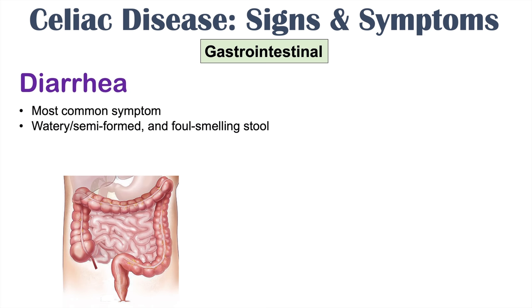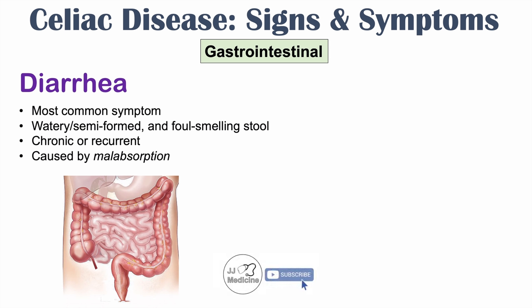The diarrhea is often a watery or semi-formed stool and it is foul smelling. It is a chronic or recurrent issue. This diarrhea is caused by malabsorption — nutrients not being absorbed end up in the gastrointestinal lumen, travel to the large intestine, where bacteria digest them and water flows toward those nutrients, resulting in watery diarrhea.